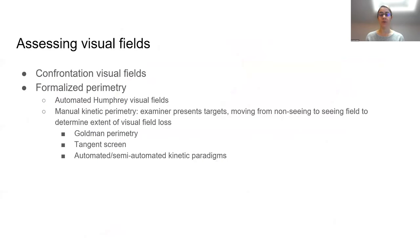It's important to accurately and reliably assess visual fields in these patients so that we can understand what type of field loss they have and how it might impact their function. Standardly, we do confrontation visual fields on every patient where we show fingers off to the side and ask the patient how many fingers are seen. This gives us a gross assessment of patients' peripheral vision and the extent of their field loss.